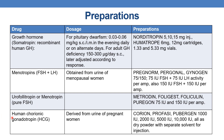Next is human chorionic gonadotrophin (HCG), derived from the urine of pregnant women. Preparations are Chorion, Profasi, and Pubergen — available in 1000 IU, 2000 IU, 5000 IU, or 10,000 IU, all as dry powders with separate solvent for injection.